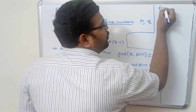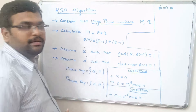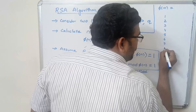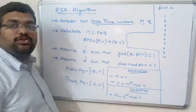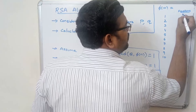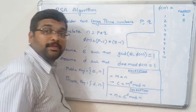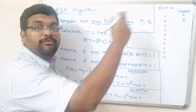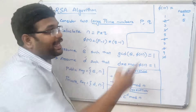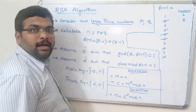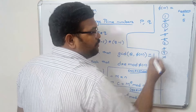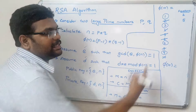Let me explain Euler's totient function. Take the example of phi(10). Write all numbers from 1 to 10: 1, 2, 3, 4, 5, 6, 7, 8, 9, 10. Write down the factors of 10, which are 2 and 5. Cross out all multiples of these factors: cross out 2, 4, 6, 8, 10 for factor 2, and cross out 5 and 10 for factor 5. Count the remaining numbers: 1, 3, 7, 9 — that gives us 4. So Euler's totient function phi(10) equals 4.